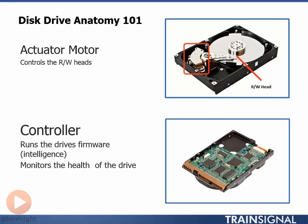To recap: the read-write heads sit right on the end of the actuator arm. The actuator arm and actuator assembly controls the positioning of the read-write heads. The logic behind controlling the read-write heads — and actually the logic behind all of the disk drive — sits on the disk drive controller, which is silicon-based. It monitors the health of the drive, it provides the abstracted address space of the drive, and it does all of the other intelligent things that modern disk drives do.